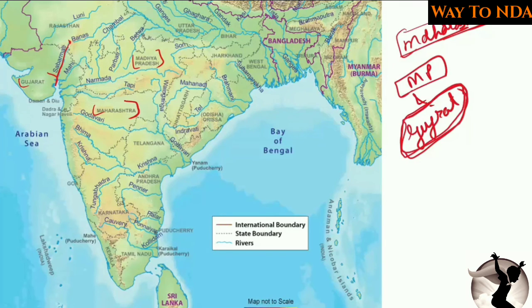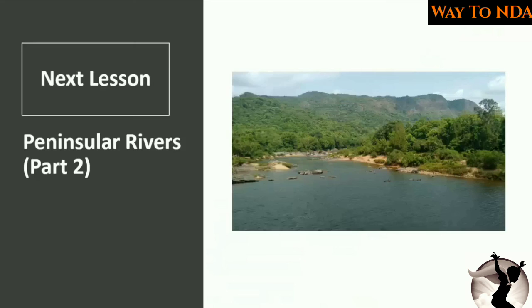The Mahi river is also a small river that meets the Gulf of Khambhat in the Arabian Sea. These are the important west-flowing rivers of peninsular India. In the next chapter, we are going to study the east-flowing rivers of the peninsula — the rivers flowing in the eastern direction and meeting the Bay of Bengal.